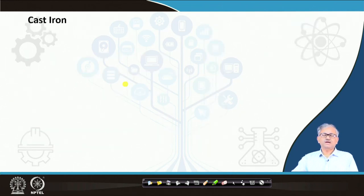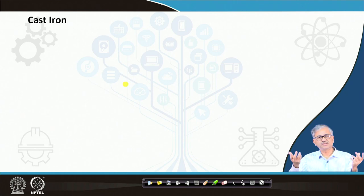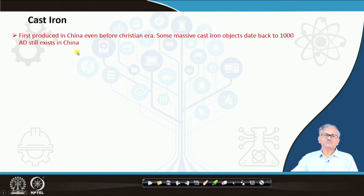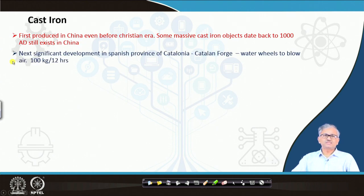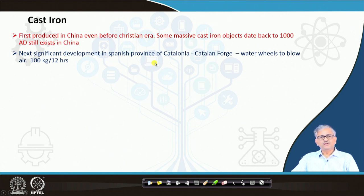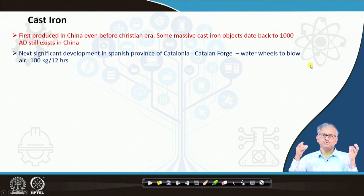Then let us see the cast iron. Cast iron means basically you have to make liquid iron and then cast it into different shapes — that is called cast iron. Cast iron was first produced even before the Christian era in China, and in the Chinese Museum you can get some big objects of cast iron dating back to around 1081 AD. The next significant development moved towards Europe — the Spanish province of Catalonia with the Catalan forge. The unique characteristic is that they used water wheels to blow the air.